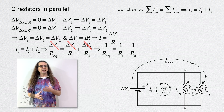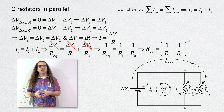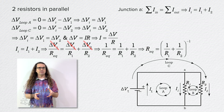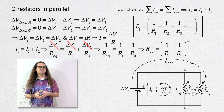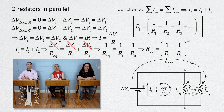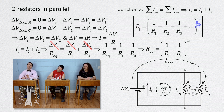Now we can take the inverse of the whole equation, and because we could perform this with as many resistors in parallel as we want, the equation for the equivalent resistance of resistors in parallel is: the equivalent resistance equals the inverse of the sum of the inverses of the resistances.